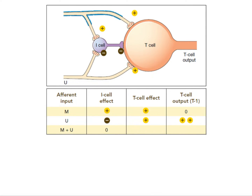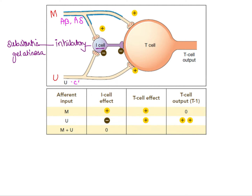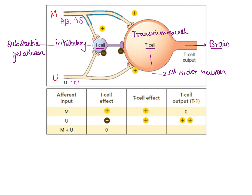Now getting on with the Gate Control Theory — we should thoroughly understand the given picture. We focus on two different nerve fibers: myelinated (A-beta and A-delta) and unmyelinated (C fibers). There is something called an I-cell, which stands for inhibitory interneurons, and the inhibitory interneuron is nothing but the Substantia Gelatinosa — the gate according to Melzack and Wall. There is also a T-cell, which stands for transmission cell, and this T-cell is the second-order neuron. Once the T-cell is stimulated, it transmits nociceptive impulses to the higher centers in the brain.